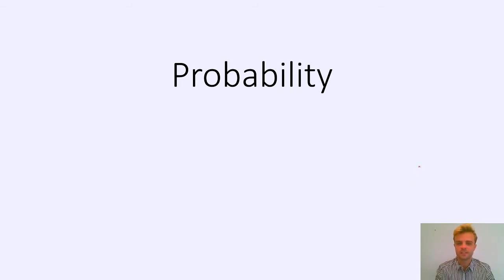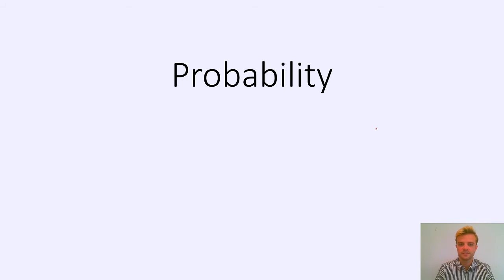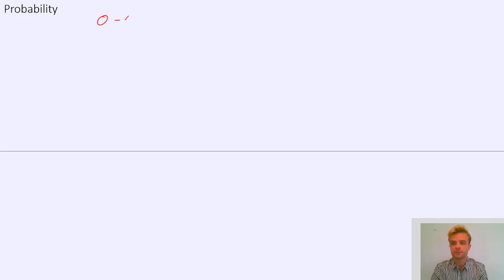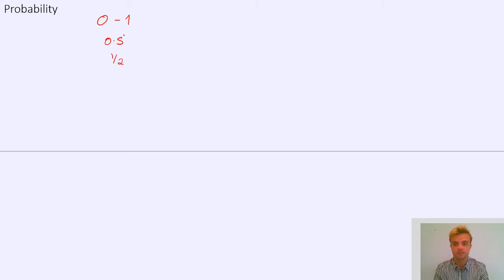So here we're going to start having a look at probability. Now probability, I think, is helpful to think of it as a fraction because probability can be anywhere from 0 to 1, and that means as a decimal you might have something like 0.5, or as a fraction you might have a half.